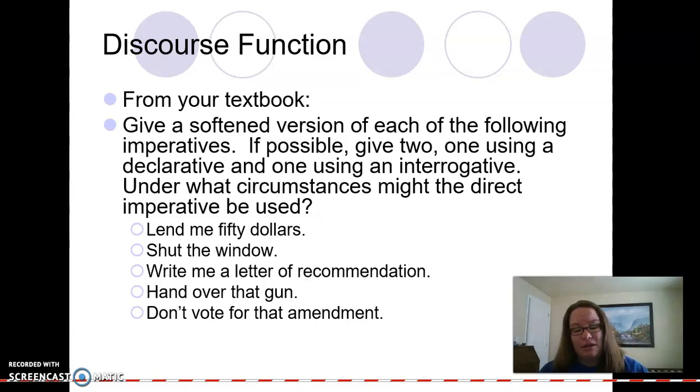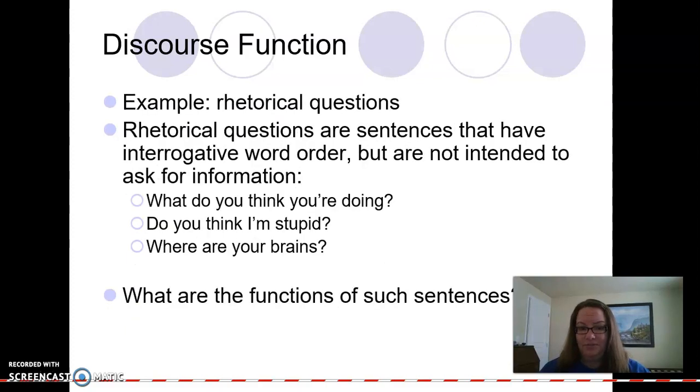So one thing we talk about when we talk about discourse function is about politeness. So a softened version of these imperatives. And you might be able to talk about either these as either a declarative or an interrogative. So something like lend me $50, to soften that I don't usually just go up to someone and say, hey, lend me $50. But to soften that, I might say something like, could you please lend me $50? Or it would be great if you could lend me $50 is the declarative. So there are different ways that we can couch these sentences to try to help give sort of a more polite feeling with those.